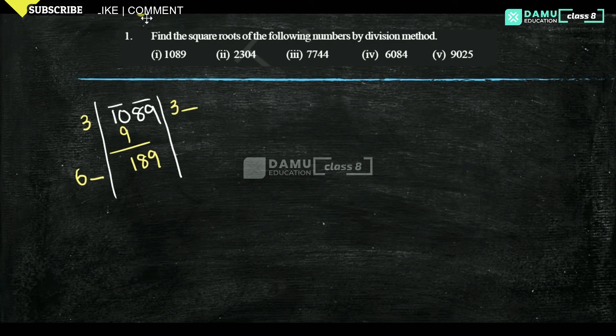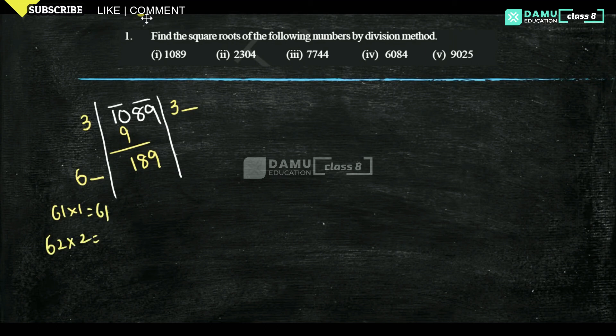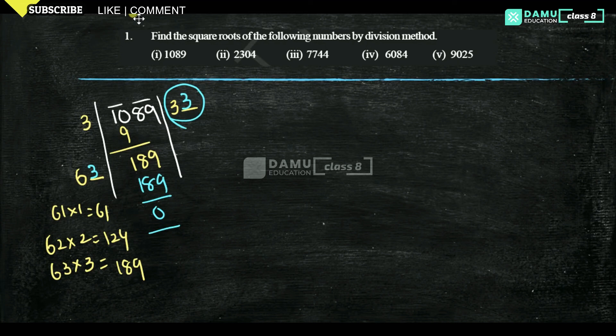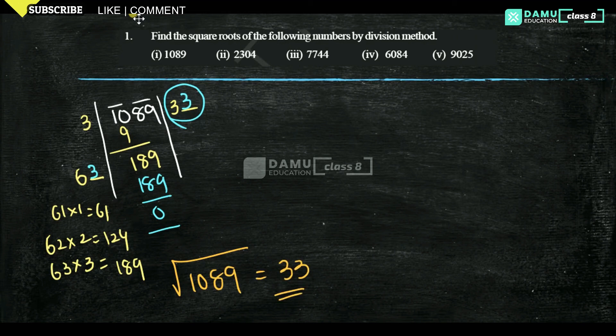So what number will we take here? Let's start with 1. 61 into 1 is 61. Then 62 into 2 is 124. 63 into 3 is 189. Whatever number you place here, same number you have to place here. So 189, then we're getting 0. The answer is 33. That is, square root of 1089 equals 33, that means 33 into 33.